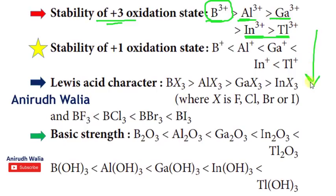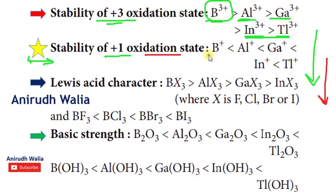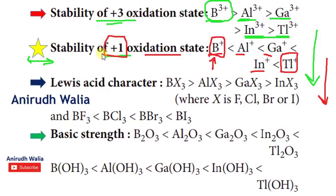As we move from top to bottom in the group, the stability of the plus three oxidation state decreases. On the other hand, the stability of the plus one oxidation state increases as we move down the group. Thallium with plus one oxidation state is more stable than indium and gallium, while boron with plus one is the least stable because boron with plus three is the most stable.